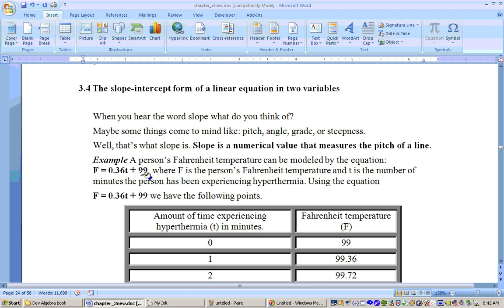0 in for T, you'll get 99. And here's that point plotted. If you put 0 in for T, 0.36 times 0 is 0, plus 99 gives you 99. So that is your Y-intercept.